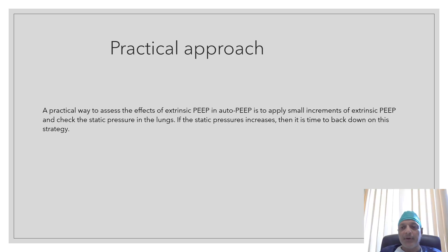So what is the most practical approach to applying extrinsic PEEP in the presence of auto PEEP, and which patients with expiratory airflow limitation will benefit? The most practical approach is to apply small increments of extrinsic PEEP and check the static pressure of the lungs. If the static pressure of the lungs increases with the applied PEEP, then it is time to back down on this strategy.